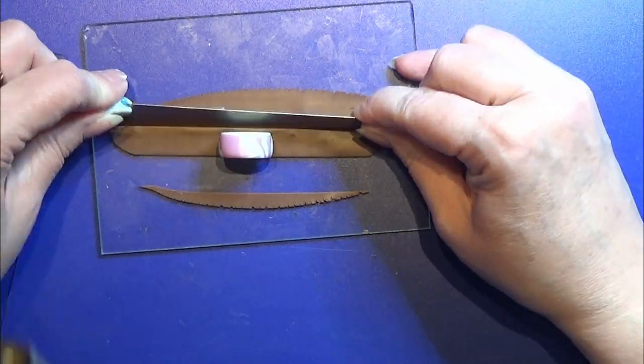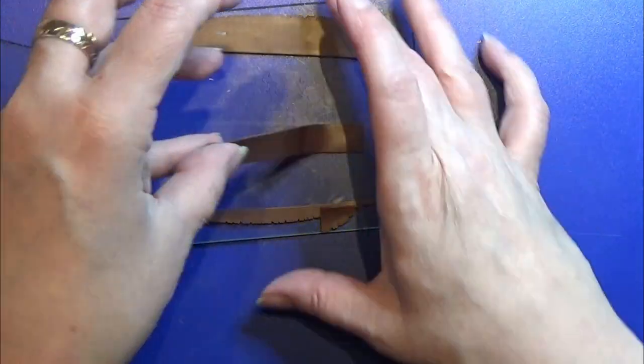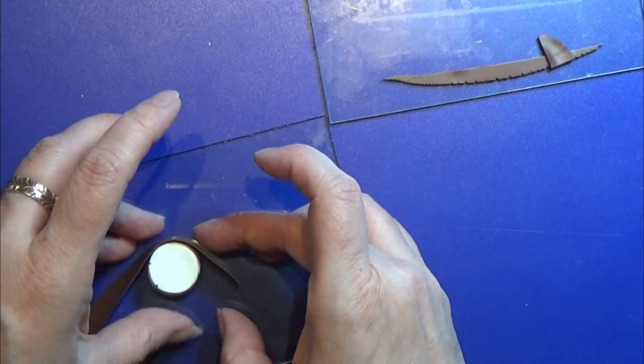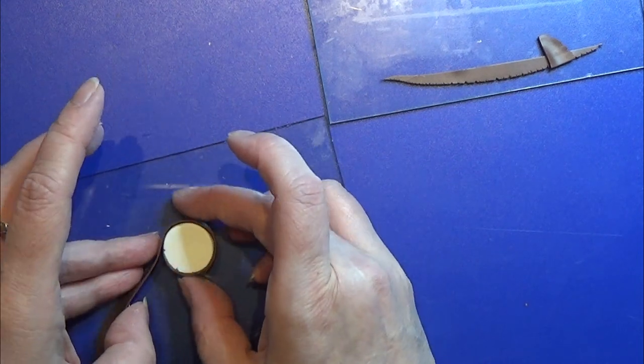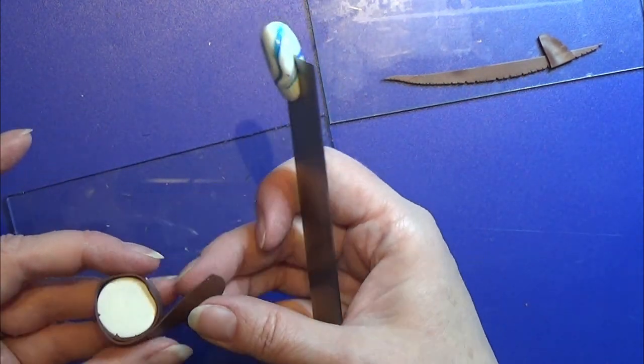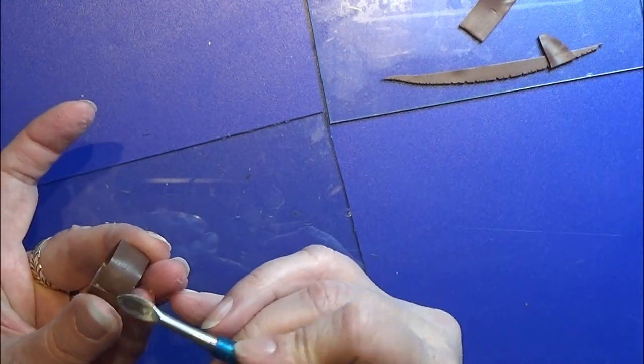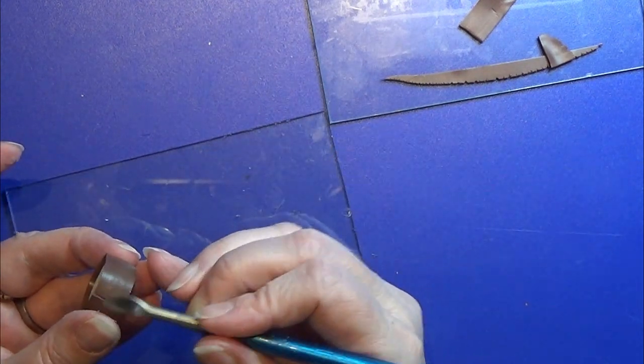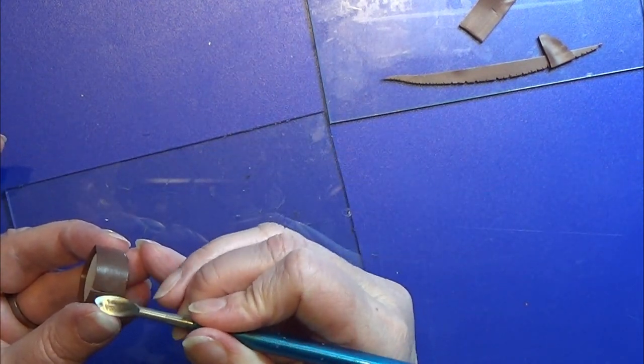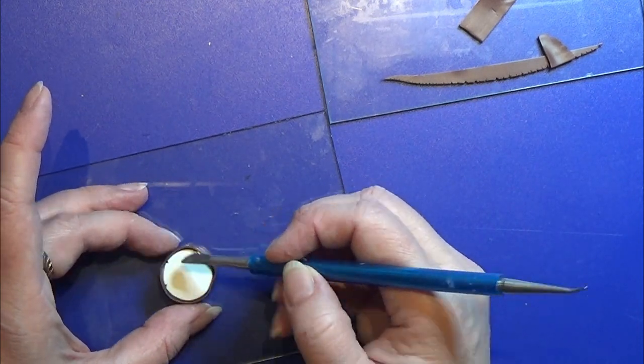I rolled out some brown clay on my pasta machine on the second smallest setting and I'm going to cut out a rim from my cake. I like it to be a little taller than the cake itself. I'm making sure that it is not overlapping and then I'm going to smooth the connection together so that you really don't see it that much. Take your time with this so your cake is going to turn out just like you want it.